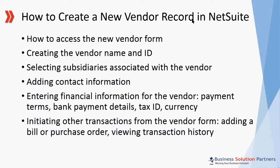I'll show you how to create the vendor name and ID, how to select the procedures associated with your vendor, how to add information for contact purposes. I'll also go over how to enter financial information for your vendor such as payment terms, bank payment details, tax ID number, and the currencies that you want to be able to pay this vendor in. At the end I'll show you how you can initiate some transactions from the vendor form like adding a bill or purchase order, and also viewing transaction history once you have records associated with the vendor.